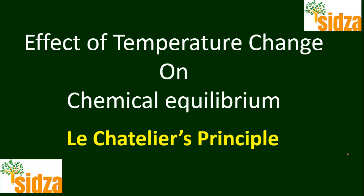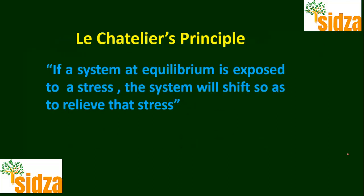Effect of temperature change on chemical equilibrium. According to Le Chatelier's principle, if a system at equilibrium is subjected to any stress, the system will react in a way so that it can relieve that stress. This means that a chemical system in equilibrium, if we impose any kind of change on it, the system will react in a way so that it can undo that change.